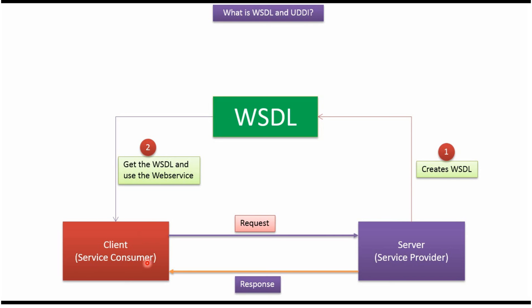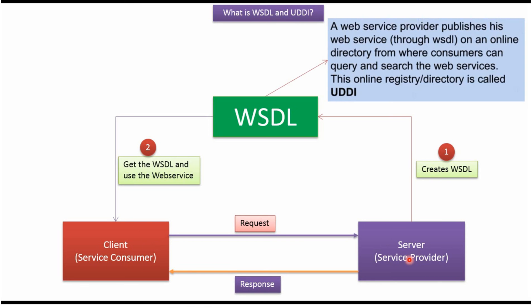Suppose the service consumer does not know who the service provider is — in that case, how will the service consumer get the WSDL file? In this case we use the second approach: the service provider publishes his web service through WSDL on an online directory or registry called UDDI. From this registry the service consumer can search for the web service, get the WSDL, and then consume the web service.